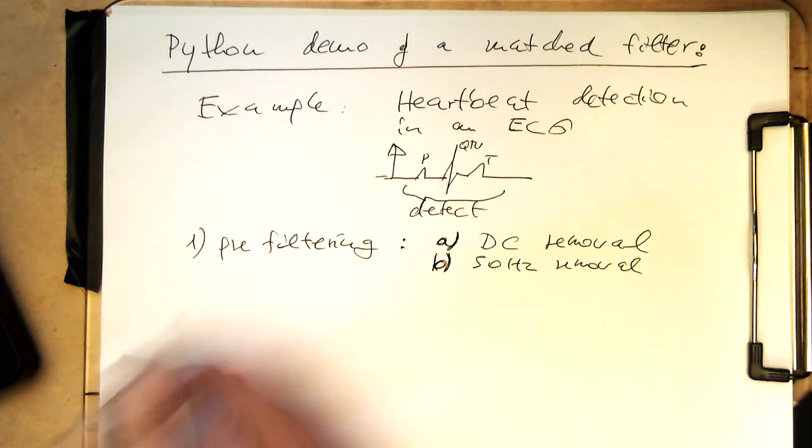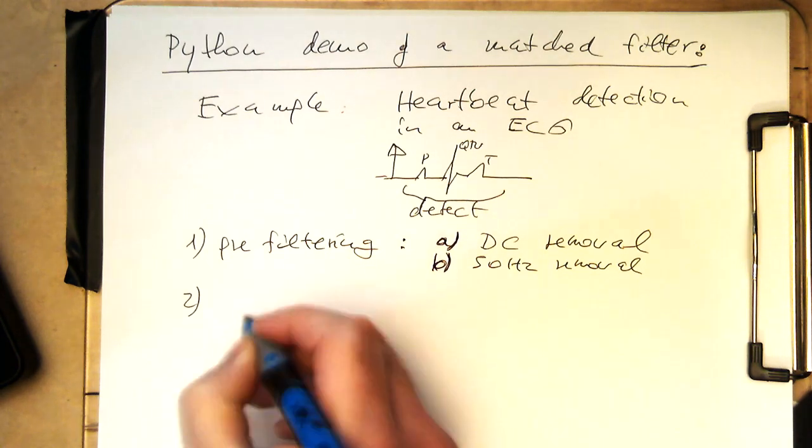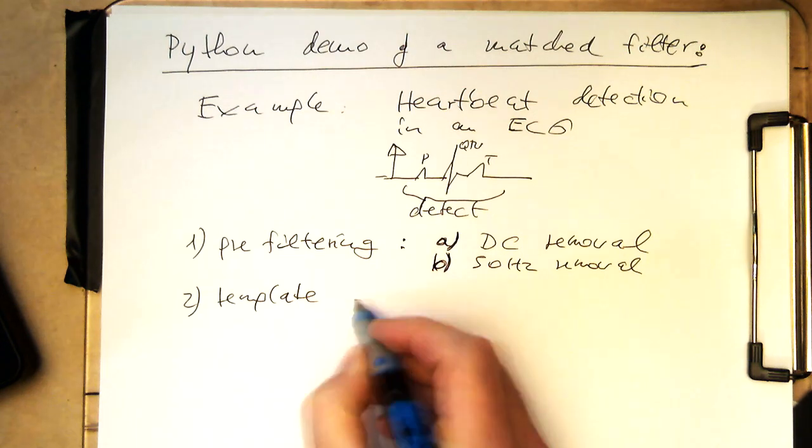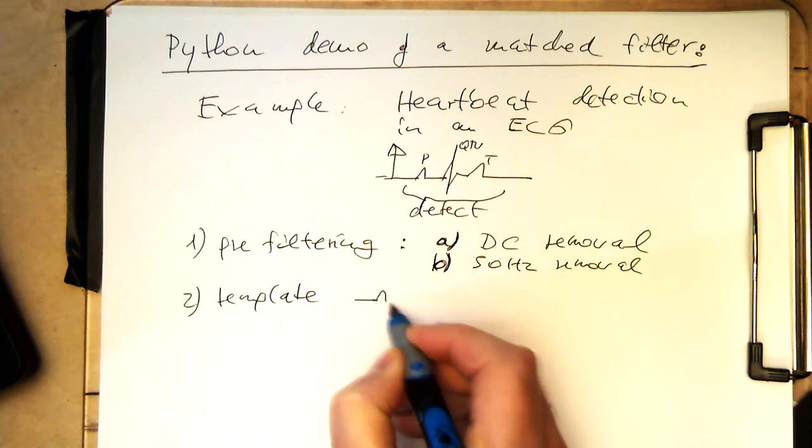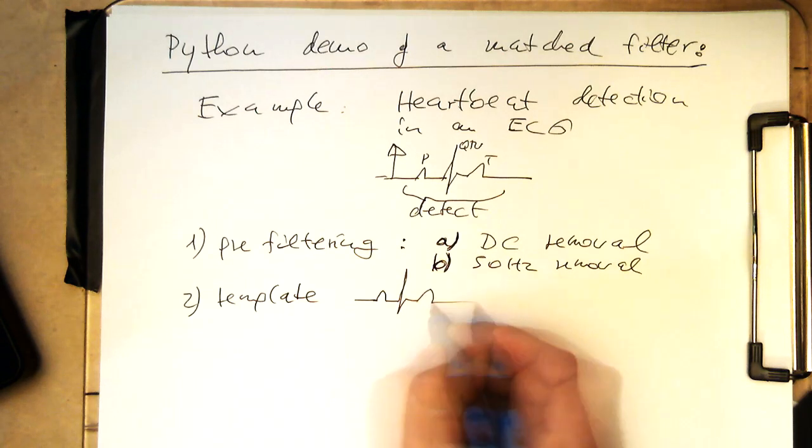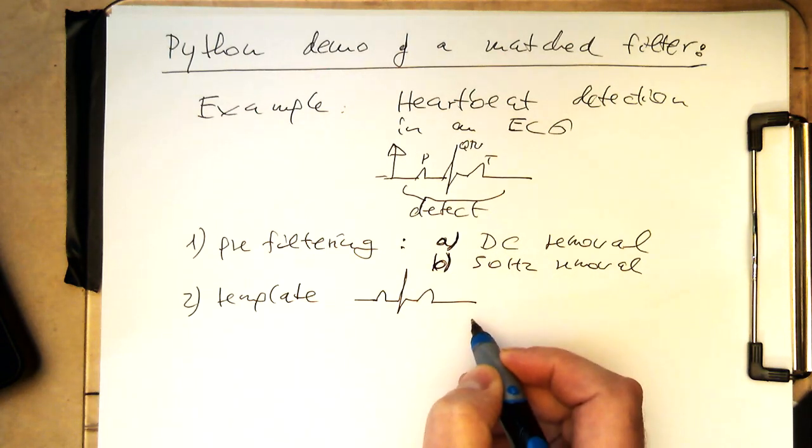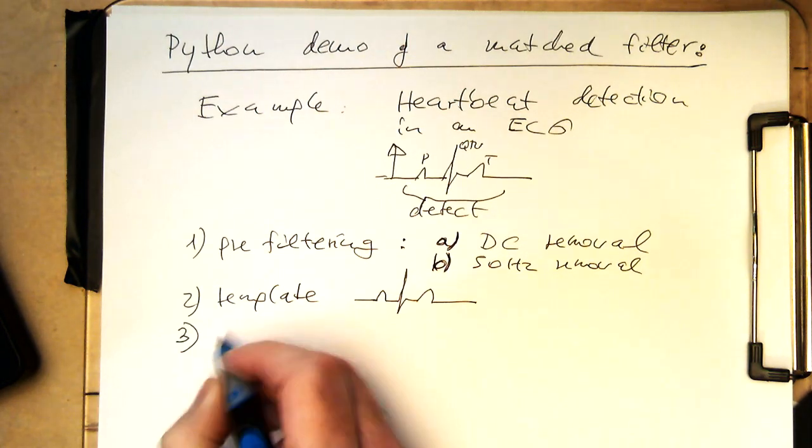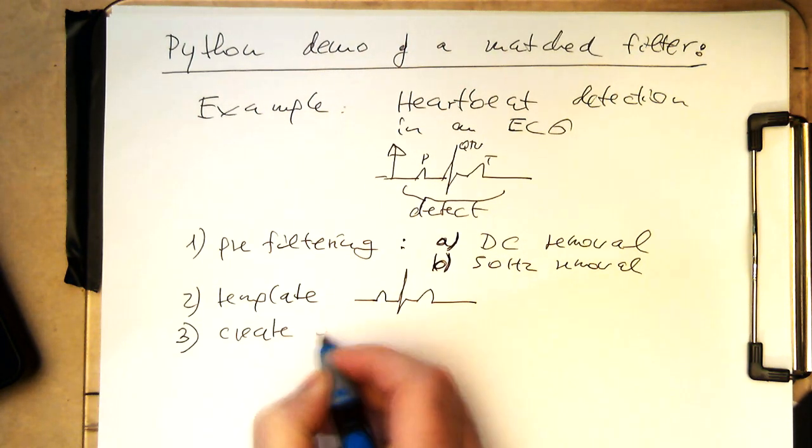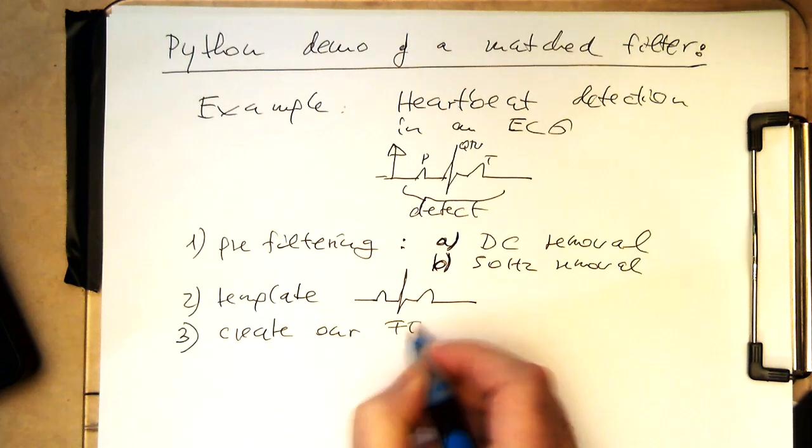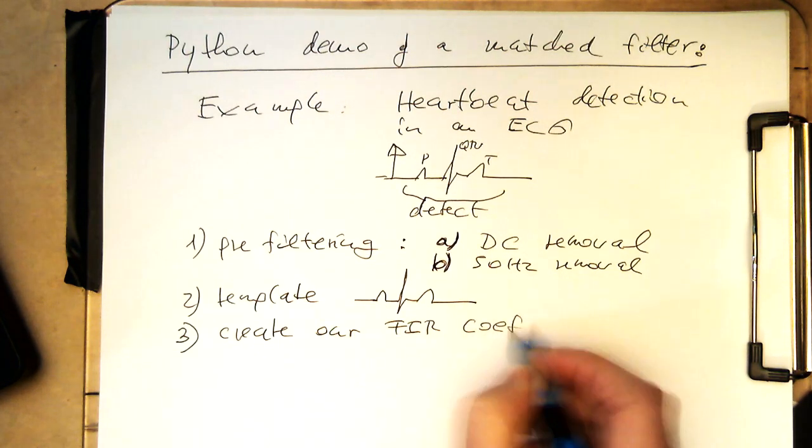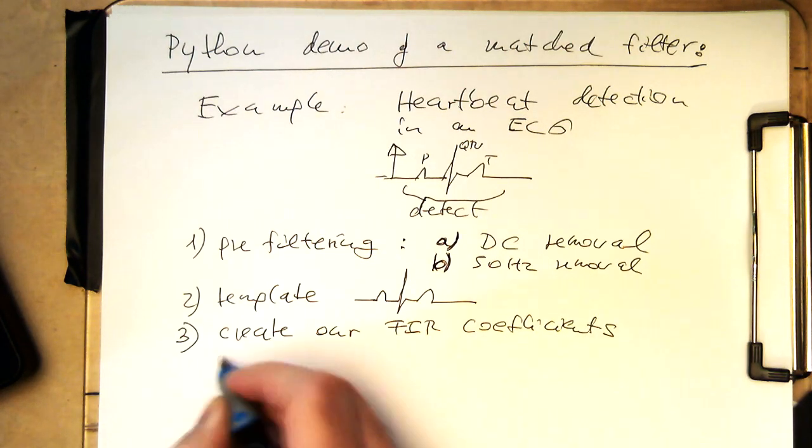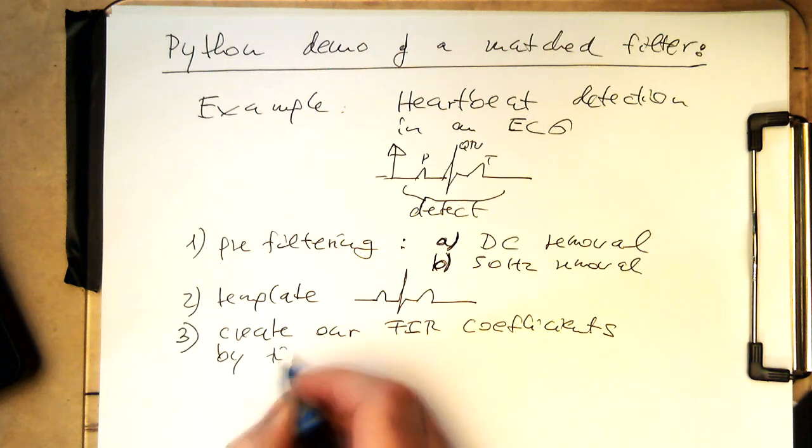And then on the basis of this we are creating our template, something like that that we have but as shown above there. So that's our template. And then we create our FIR coefficients by time reversing it.